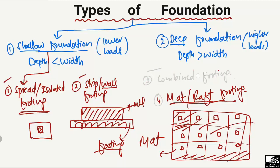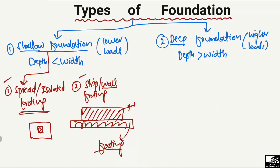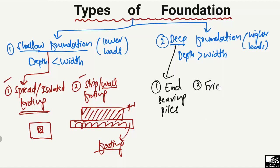Now we come to the deep foundation. Deep foundations also have further types. The first type is the end bearing pile foundation, the second type is the friction pile, and the third type is known as the friction-cum-bearing pile. These are the three different types of deep foundation.